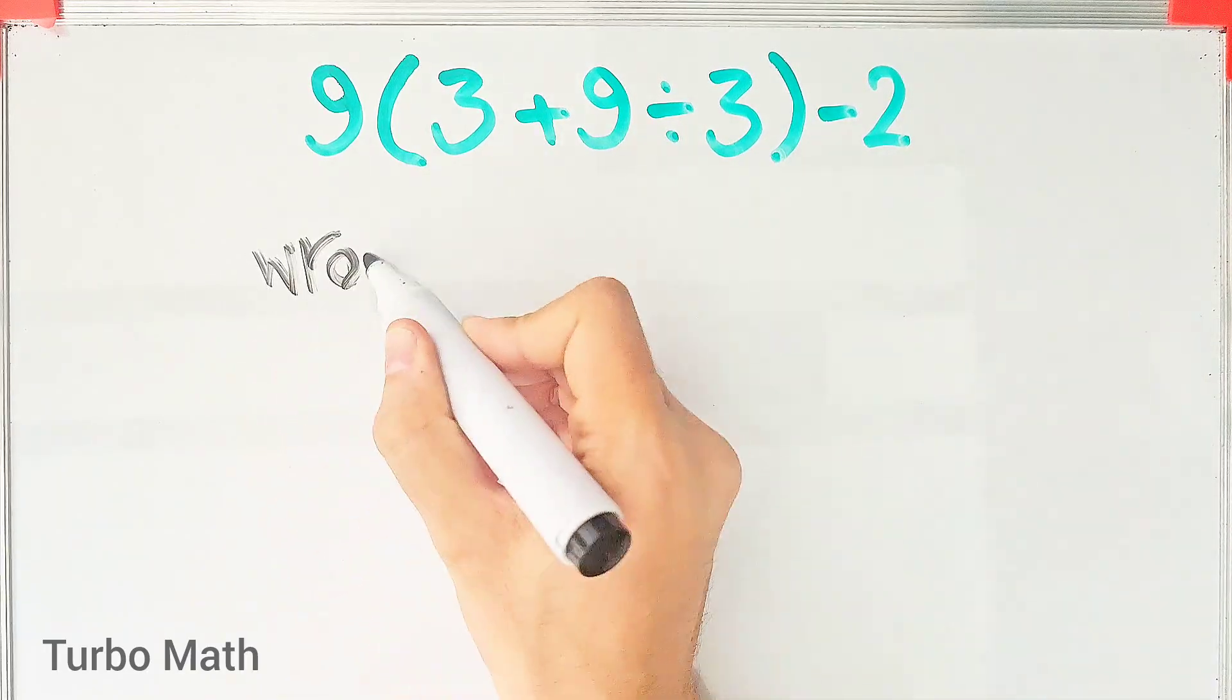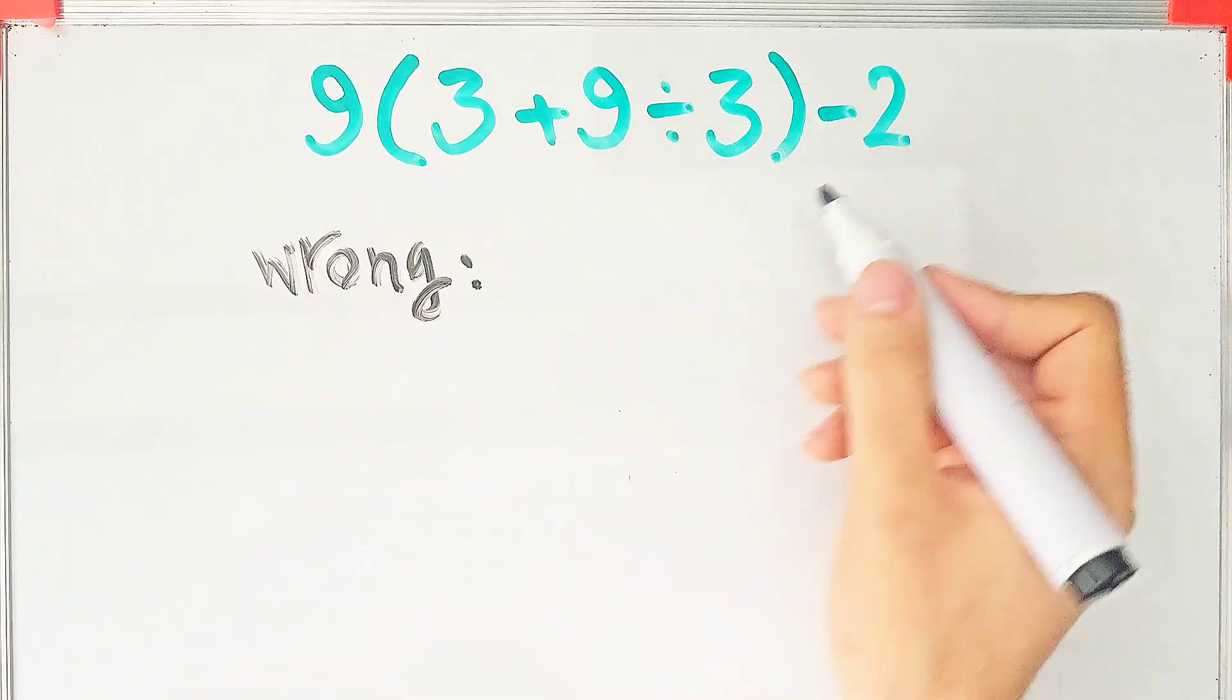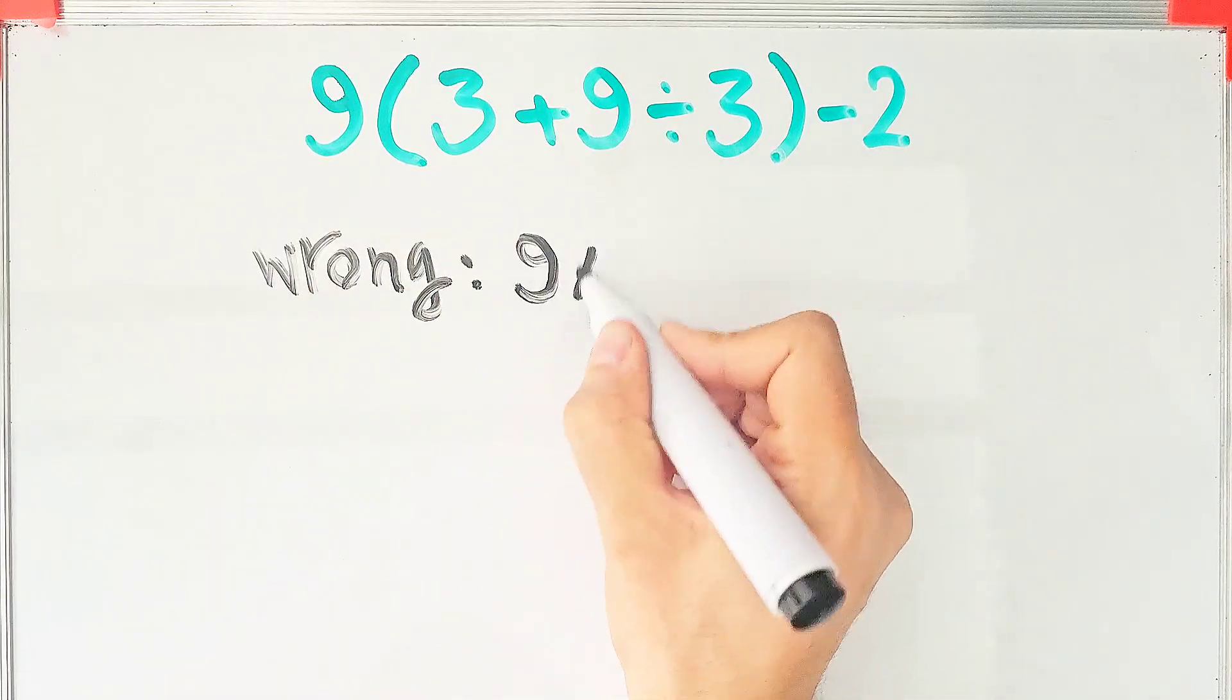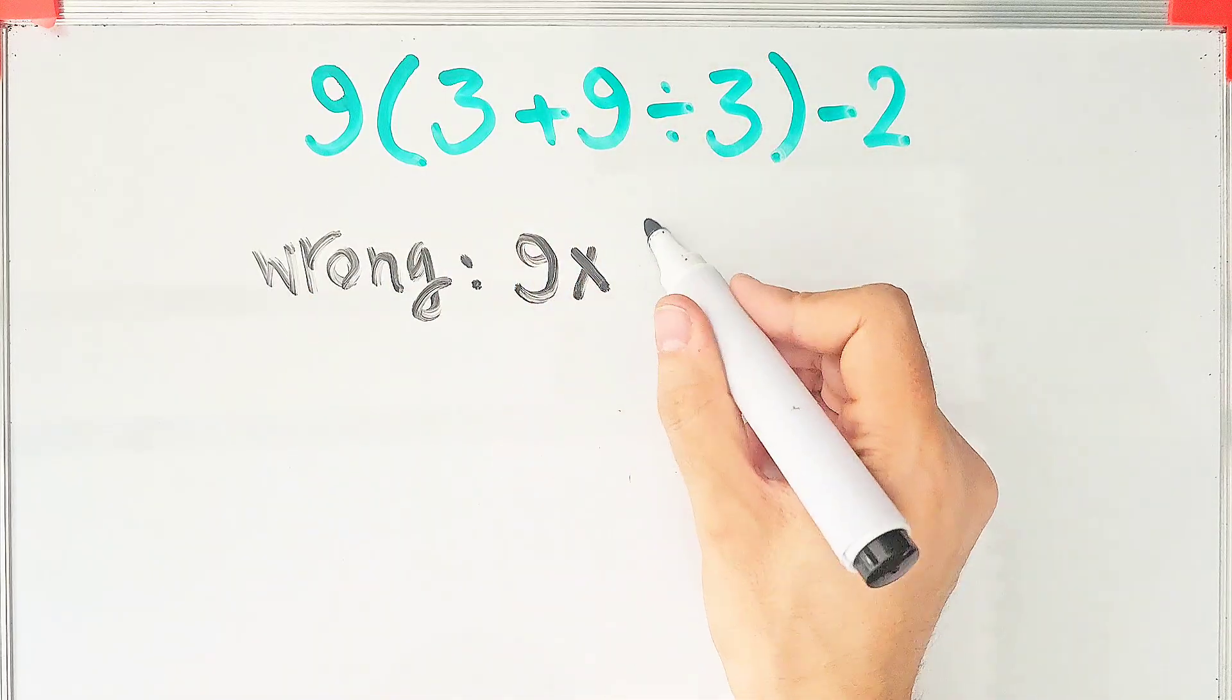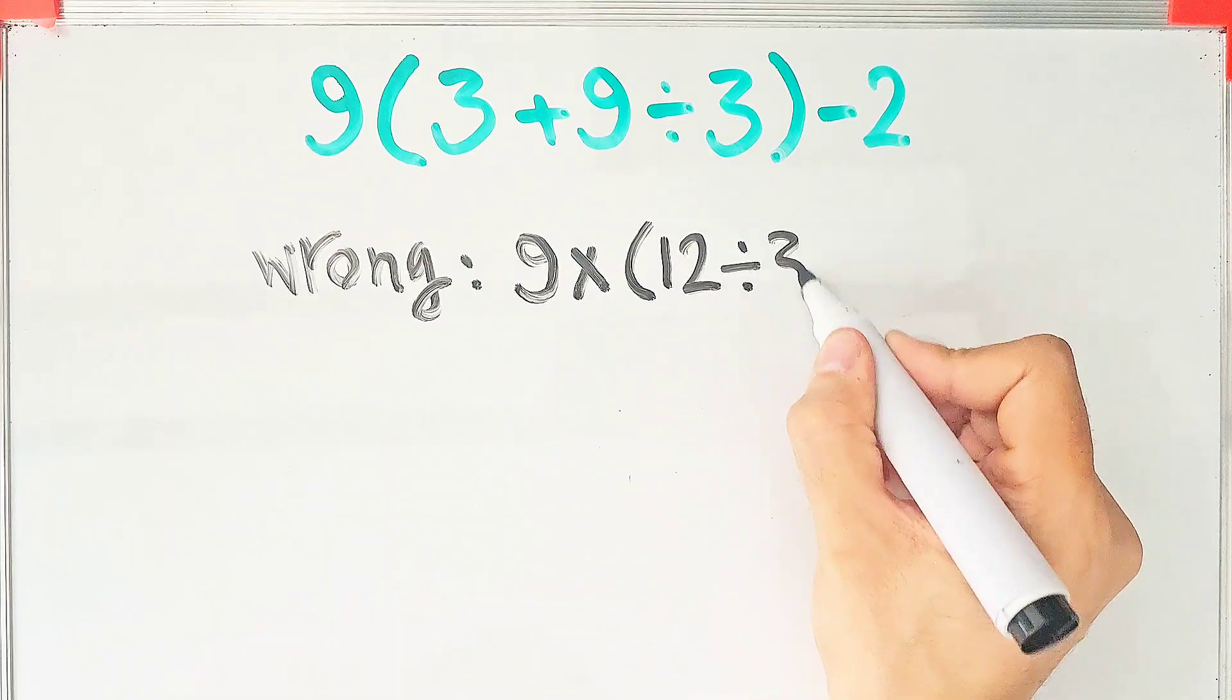In the wrong way of solving this question, some people solve it like this: 9 times 3 plus 9 equals 12, then divided by 3, then minus 2.